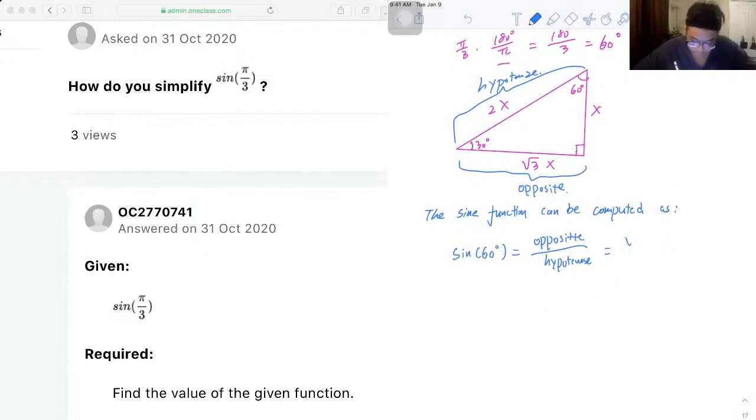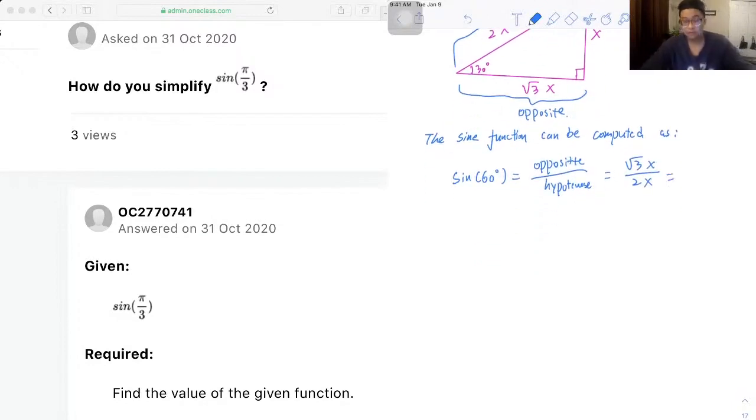So this is just going to be equal to root 3 x over 2x, and we got an x for both the denominator and numerator, so we can get rid of the x, so we have root 3 over 2 left.